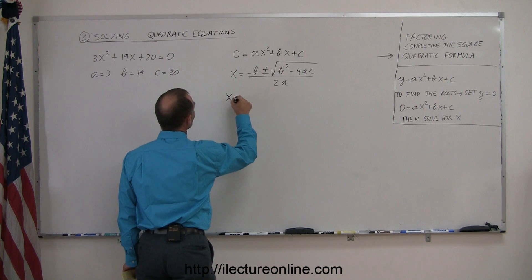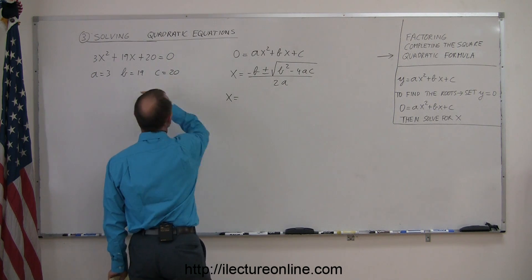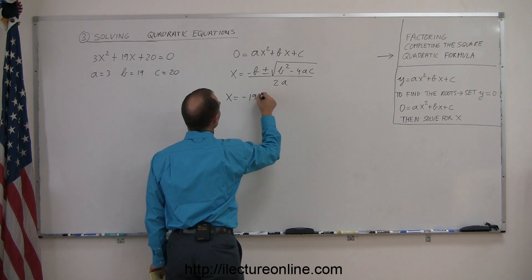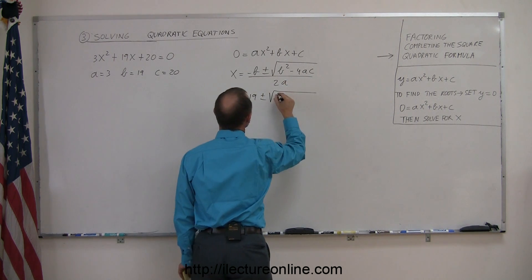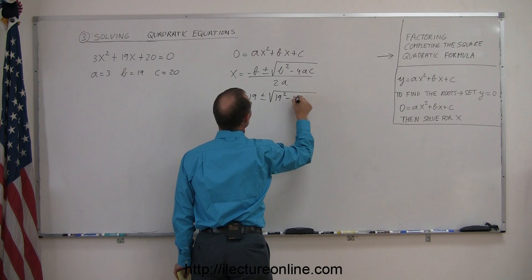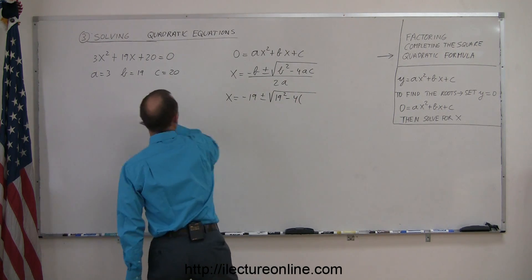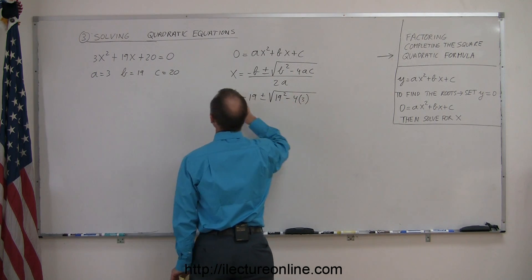So, x is equal to minus b, since b is 19, that's minus 19 plus or minus the square root of b squared, that means 19 squared, minus 4 times a, a is 3, and c is 20.